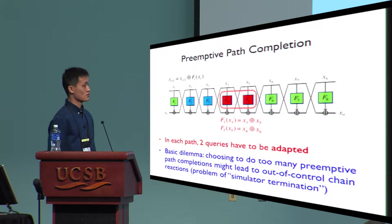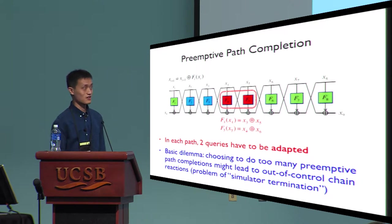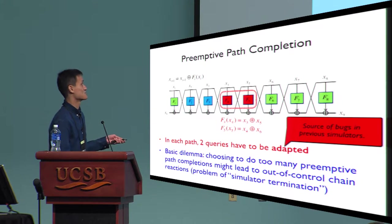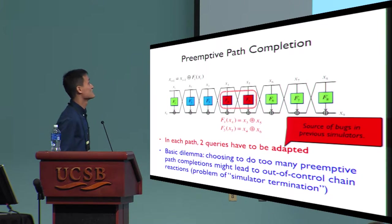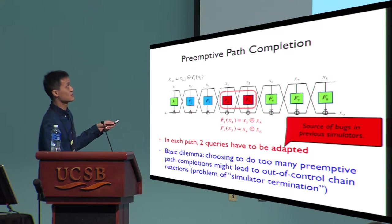On the other hand, if you choose to complete too many paths, completing a path will create more queries, which may create an out-of-control chain reaction and the simulator may never terminate. The bugs in the previous simulator lie in the first condition — it has no room to adapt. By adapting a path, we mean assigning the two queries values such that the path is consistent with the permutation.